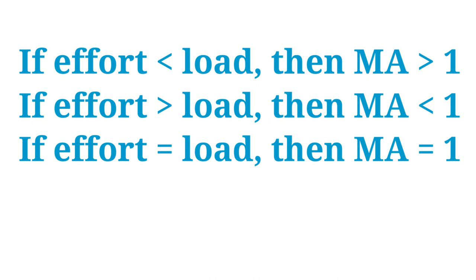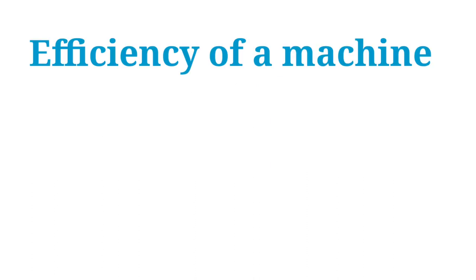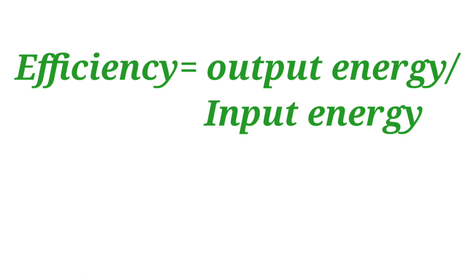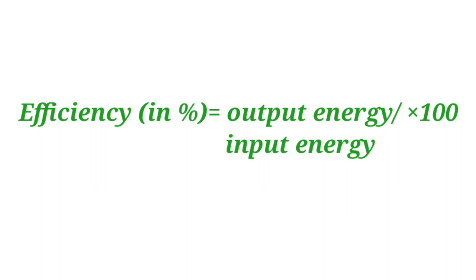If effort equals load, then mechanical advantage equals one. Now, efficiency of a machine depends on the work done by the machine and the work done on the machine. To find efficiency, we calculate output energy divided by input energy — that is, work done by the machine divided by work done on the machine. Efficiency percentage equals output energy divided by input energy, multiplied by 100. We can thus easily calculate the efficiency of a machine as a percentage.